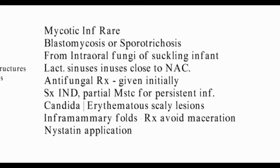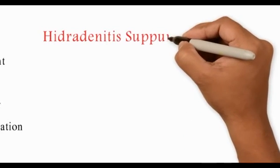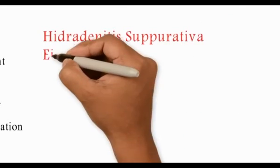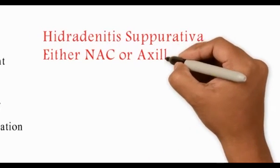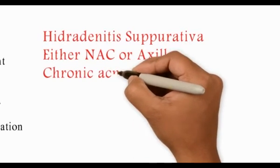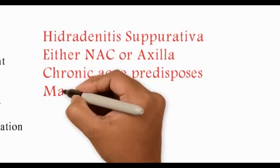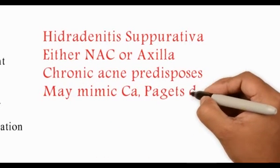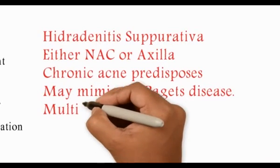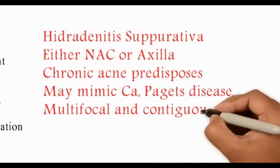Blockage of the sebaceous ducts leads to enlargement of the gland, and when secretions are extruded through the gland there is a chemical inflammation of the surrounding skin — this is called hidradenitis suppurativa. It is seen in the nipple-areolar complex or in the axilla. Chronic acne may predispose to this condition. Paget's disease is usually seen around the nipple and areola, whereas hidradenitis suppurativa is multifocal and contiguous.